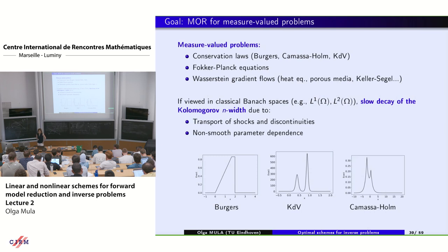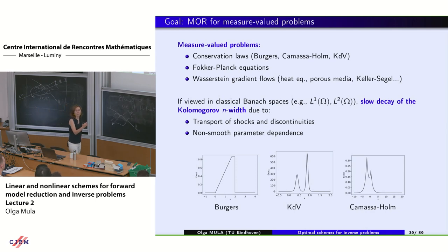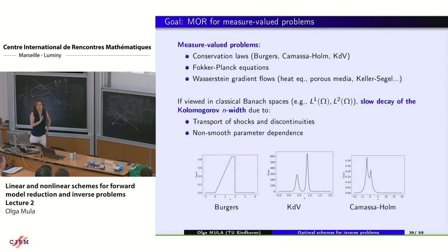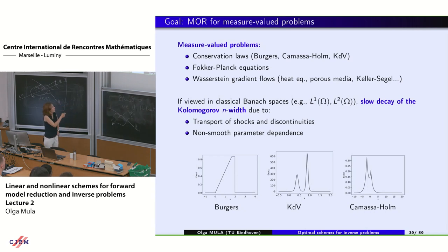For these classes of problems, unless we very carefully incorporate geometry — as Pagliantini and Hestaven do — working in classical L1 or L2 spaces means the Kolmogorov width will kill you. Linear approximation cannot handle these problems. They transport shocks and discontinuities, and may have non-smooth parameter dependence.